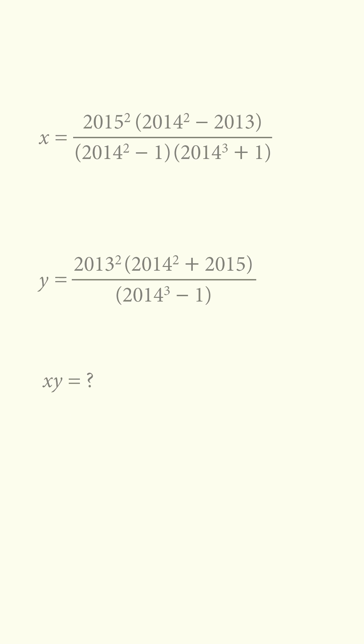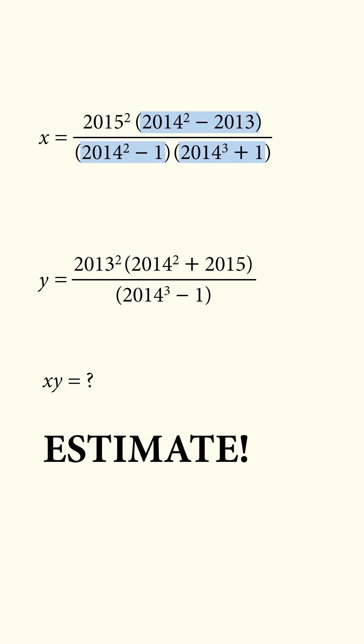But there's another way you could solve this problem, by using estimation. When you have the square or cube of a large number, and you add or subtract a small number, the estimated value will approximately be equal to the square or cube of the large number.